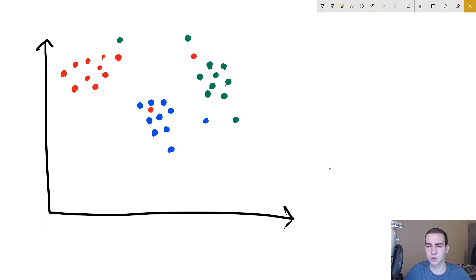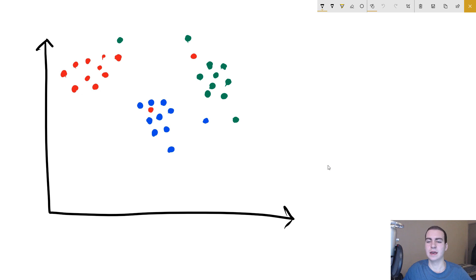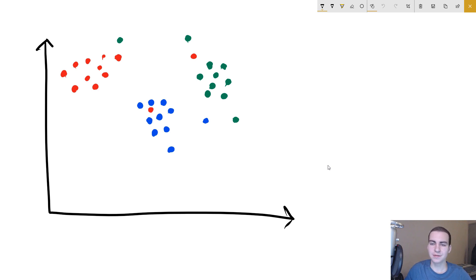I don't know how long this is going to take to explain because it is a bit more complicated than linear regression, but it's not that crazy difficult. So let's talk about the k-nearest neighbors algorithm and how it works. K-nearest neighbors is a classification algorithm, and the way it works is: given a data point, it attempts to classify that data point with one of the classes that it knows.